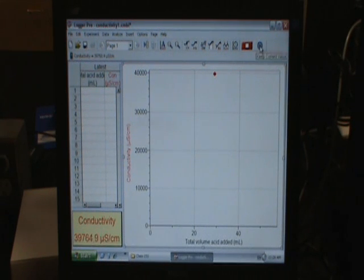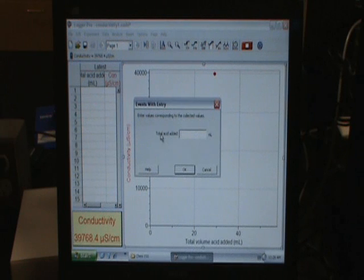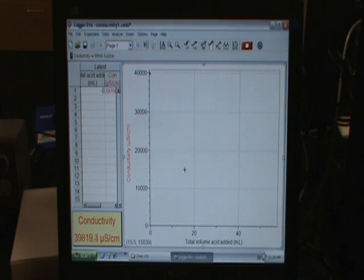So if I click keep, a dialog box will pop up and I'll tell it total acid added, zero milliliters. Okay. It just put the first point on my graph. So now we can get started on the experiment.